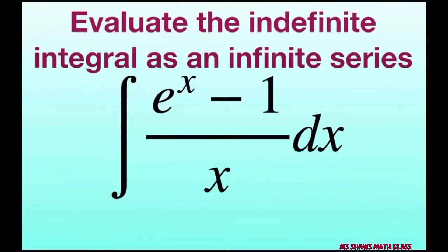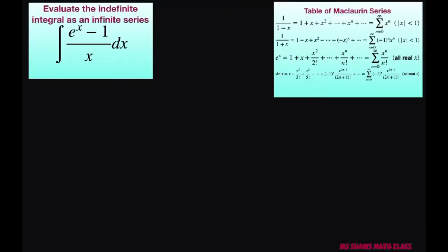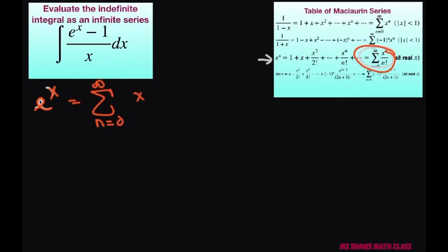Hi everyone. We're going to evaluate the indefinite integral as an infinite series. We're going to use the Maclaurin series for e to the power of x. I'm going to write it out bigger for you. We have e to the power of x equals the sum from n equals zero to infinity of x to the power of n divided by n factorial.